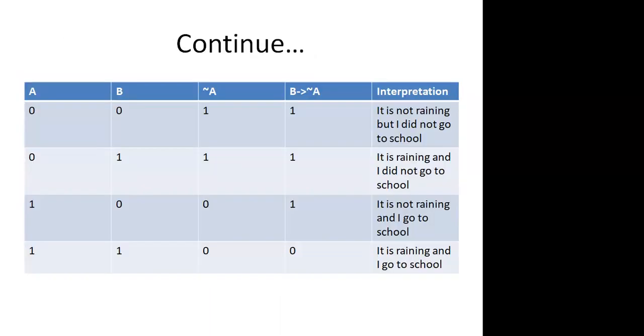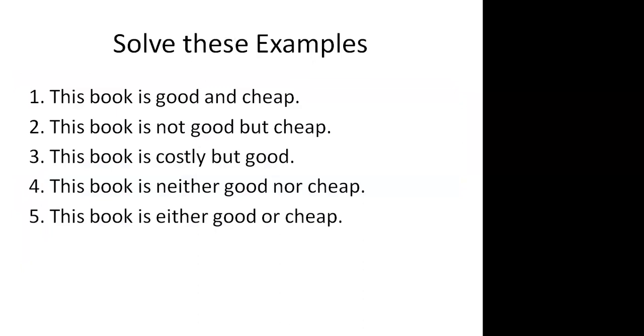Let us look at the various representations that we can have. We can look at some examples. Suppose we have sentences like this: This book is good and cheap. We can represent the fact that the book is good by the proposition A, and cheap by the proposition B. So we can write book is good and cheap by representing A and B. That will be the representation for this sentence.